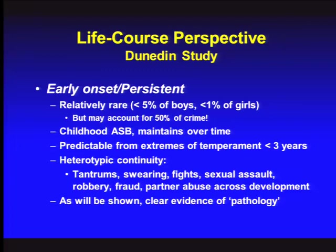Moffitt found that by ages 15–19, about 5% of kids were responsible for about 50% of the crime — true not just in New Zealand but in the US and most other countries. Who are those kids? They're the ones who at age 3 had really difficult temperaments; by age 5, kindergarten teachers reported really high ADHD and ODD symptoms; and by age 11, middle school teachers could barely keep them in the classroom. Externalizing behavior started very early in this group — about 5% of boys and under 1% of girls. By their teens, they were clearly the most violent and responsible for over 50% of the crime.